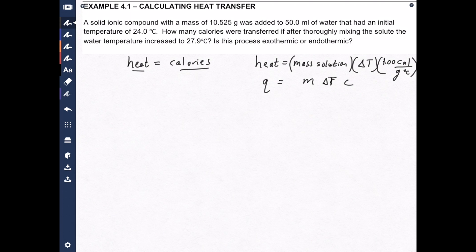Let's solve the problem. First things first, we need to know the mass of solution. So we're starting out with 50 milliliters of water and the density of water is 1 gram per milliliter. So we know that there are 50.0 grams of H2O. We also know that we're adding 10.525 grams of solute.